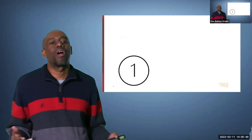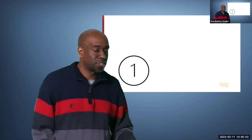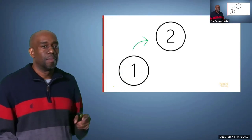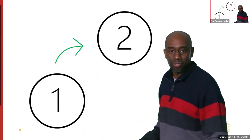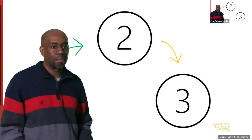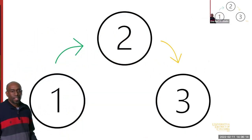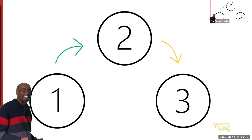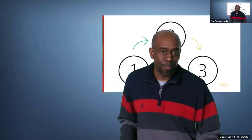Let's get into what you can do in a one-button studio. One way to interact with your content is sequentially. Instead of having all your content on screen at once, you can bring it in step by step — for example, step one leads to step two using an arrow. You can do a deep dive into step one, then bring in step two and step three. If you want to get a closer look at step one, you can do that too.